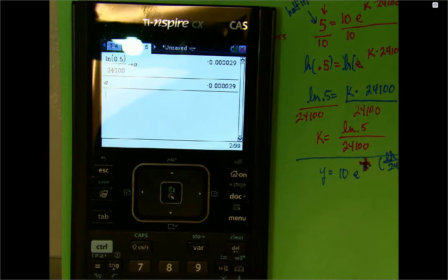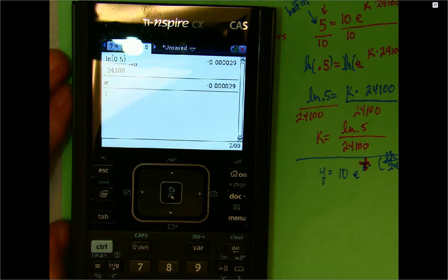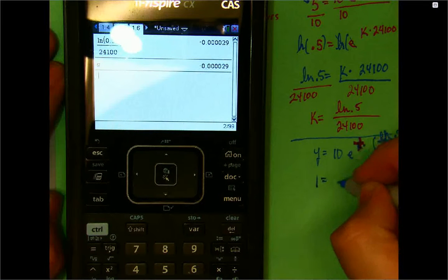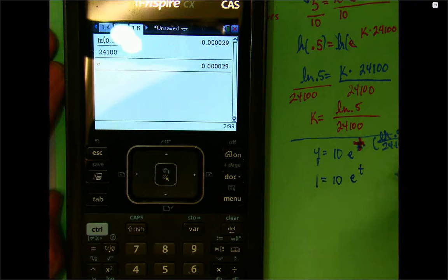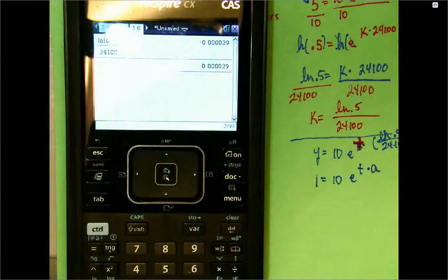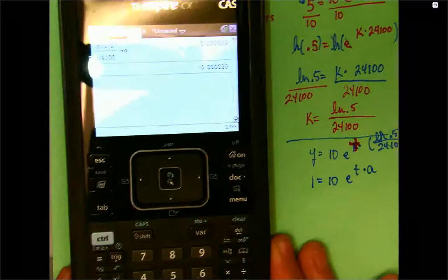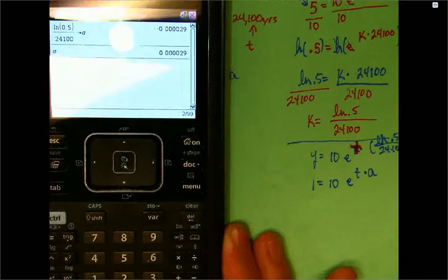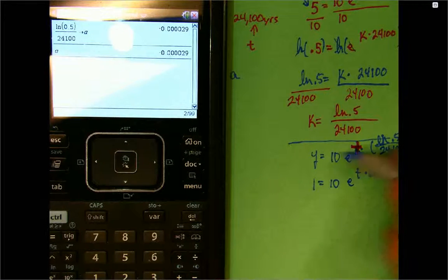Now, what's the value that I want? I want T when Y is equal to what? One. So, I want T when Y is equal to one. So, I want one is equal to 10 e to the T power times A. Well, I know my A is equal to natural log of 0.5 over 24,100.